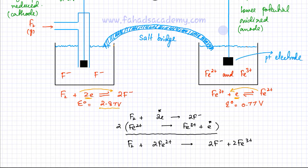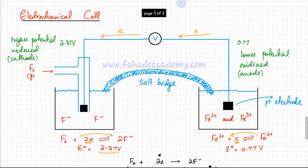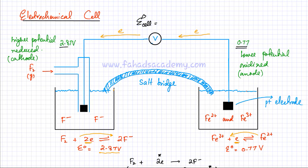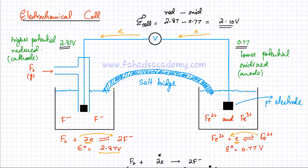I can now calculate the E0 cell for this reaction. The E0 cell equals the reduction side minus the oxidation side. I have 2.87 volts on the reduction side and 0.77 volts on the oxidation side. The potential difference between the two electrodes is 2.87 minus 0.77, which gives 2.10 volts. That's a substantially high value, which means the reaction is going to be more than feasible — it's going to be a very, very fast reaction.